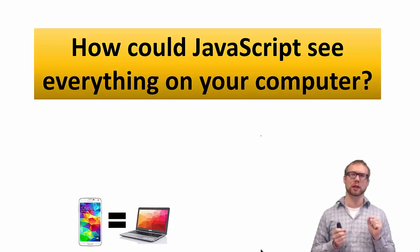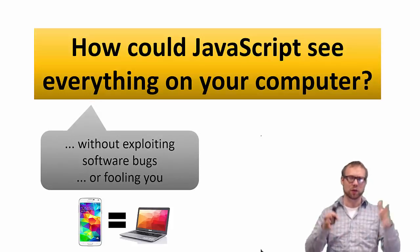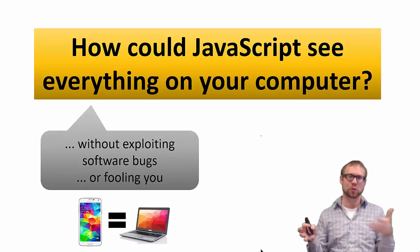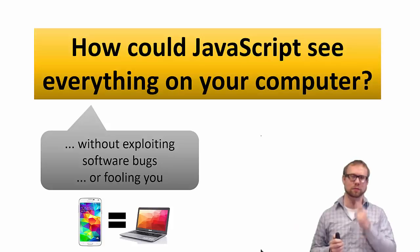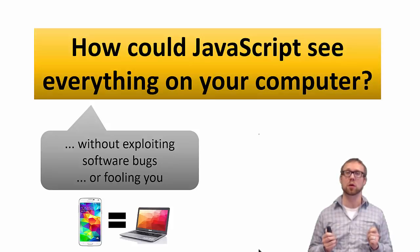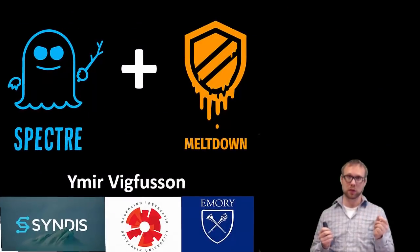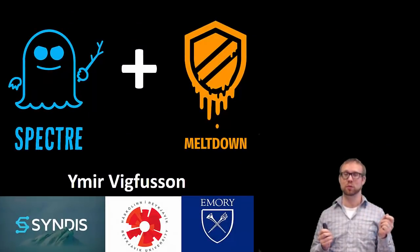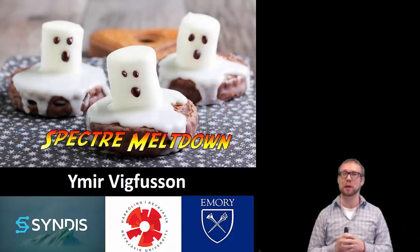What would be particularly worrying is if this were to happen without exploiting any software vulnerabilities or without fooling you to do so. That's actually the state of affairs right now. We are currently seeing a series of attacks called Spectre and Meltdown.